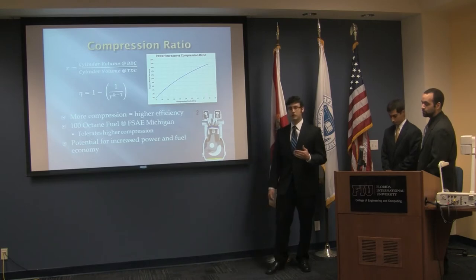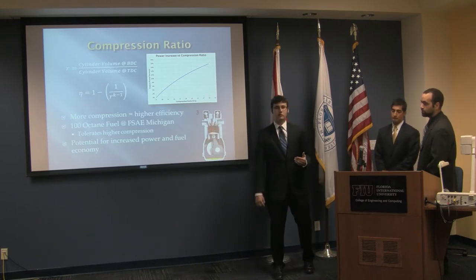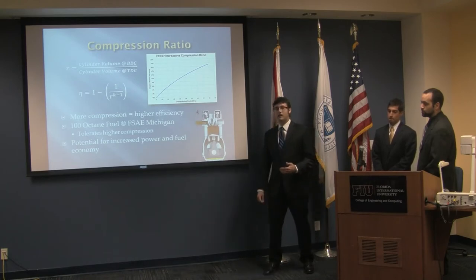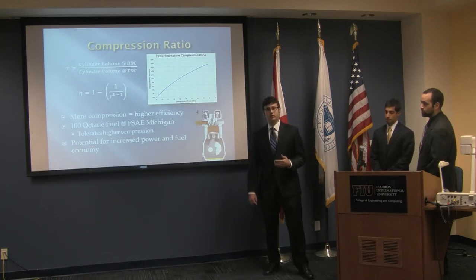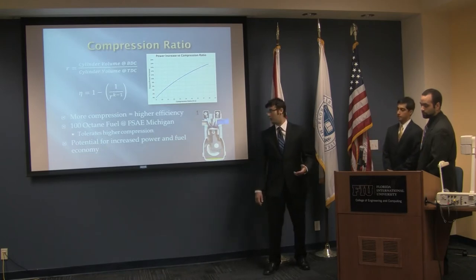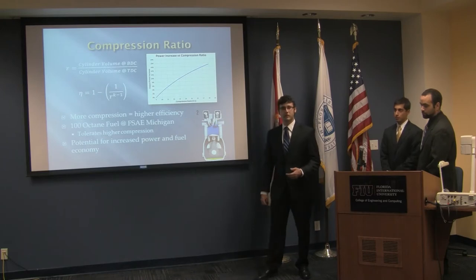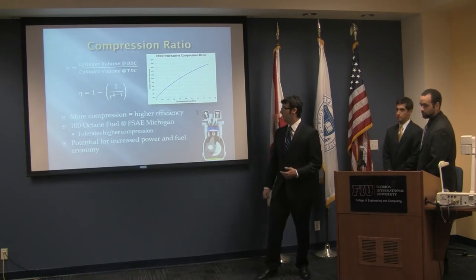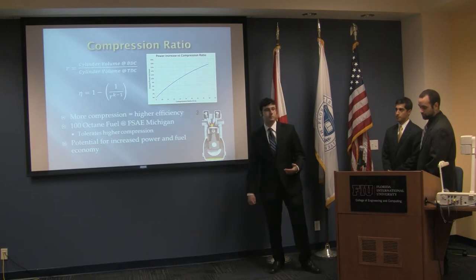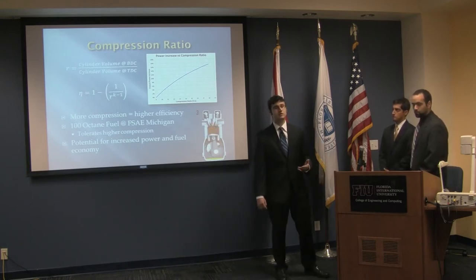The reason we are focusing on this attribute of the engine is because at the competition, we are going to be allowed to use 100 octane racing fuel, and this fuel will tolerate a higher compression ratio compared to the 87 or 93 octane fuels you can get at commercial fuel pumps, before it goes into pre-ignition or detonation that could damage engine components. This leaves the potential for increased power and fuel economy compared to the stock engines that most teams adapt for use in their cars.